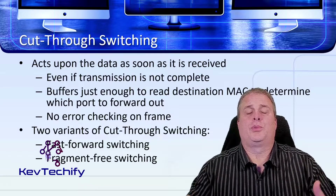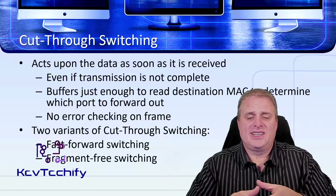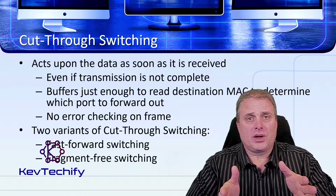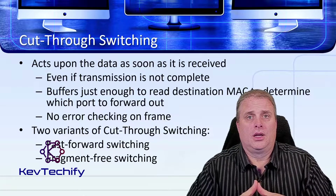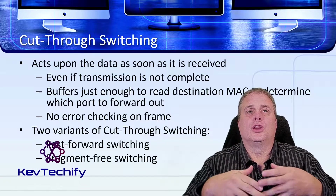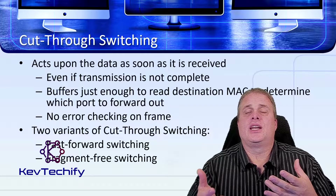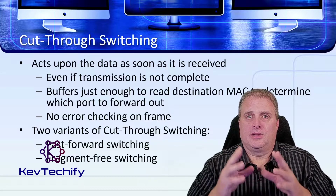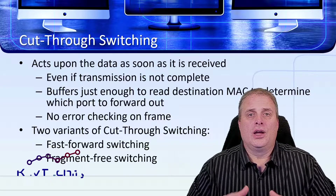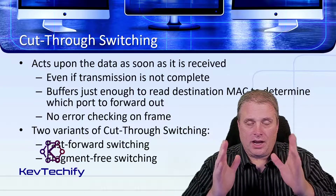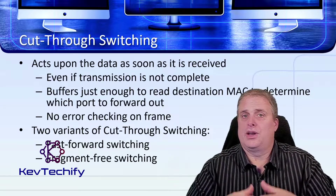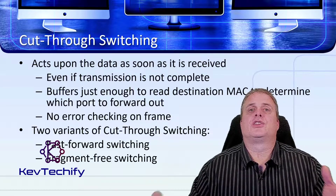Fragment-free switching is a compromise. What fragment-free switching does is it accepts the first 64 bytes of the frame — and remember, frames are between 64 bytes and 1,500 bytes long. It processes those first 64 bytes and checks for errors, making the assumption — correctly so — that if there's no error in the first 64 bytes, the rest of the frame will be error-free and can be sent through. You're not propagating bad information, but you're also not having to store the entire frame.